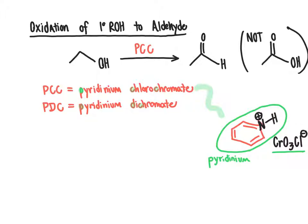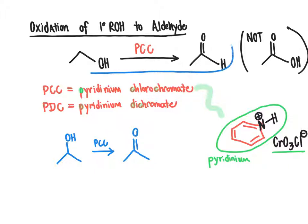If you took a secondary alcohol and mixed it with PCC or PDC, what would happen is that it would just oxidize that secondary alcohol to the carbonyl group of a ketone. PCC can oxidize both primary and secondary alcohols, but it's most useful for oxidation of primary alcohols in cases where you want to take the primary alcohol and convert it into an aldehyde as the final product rather than the carboxylic acid.